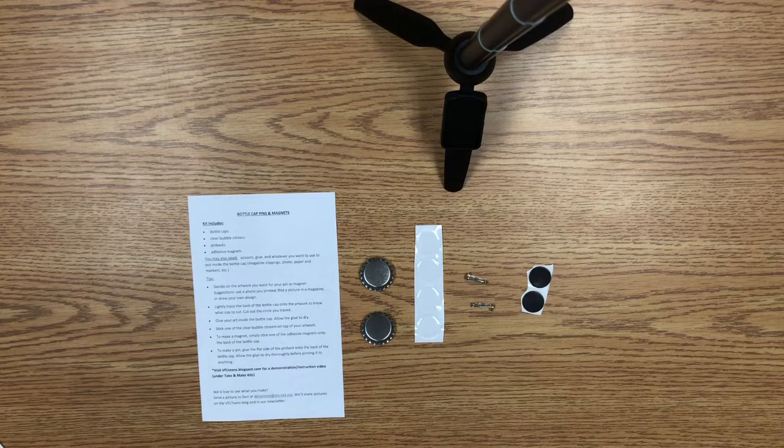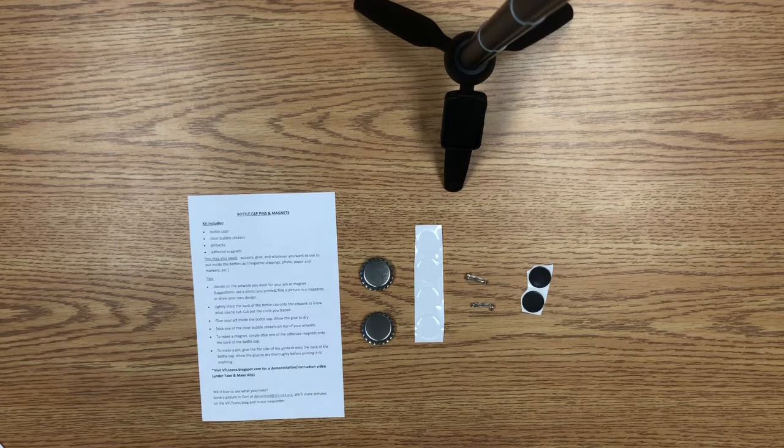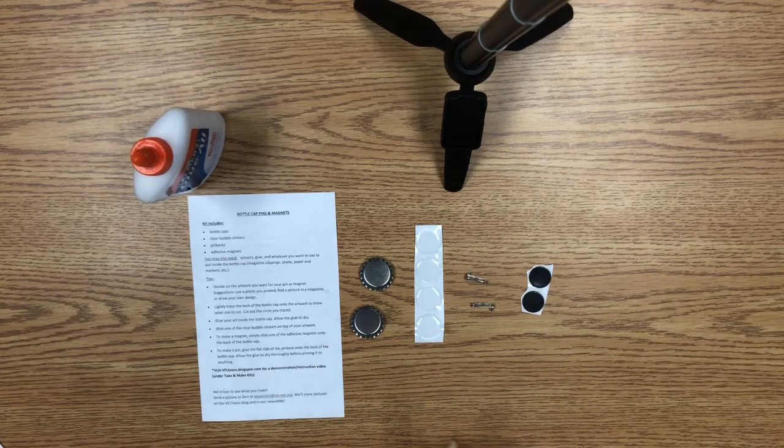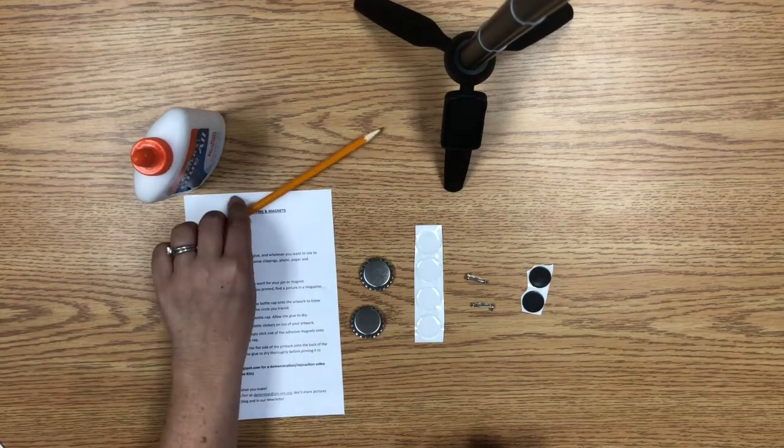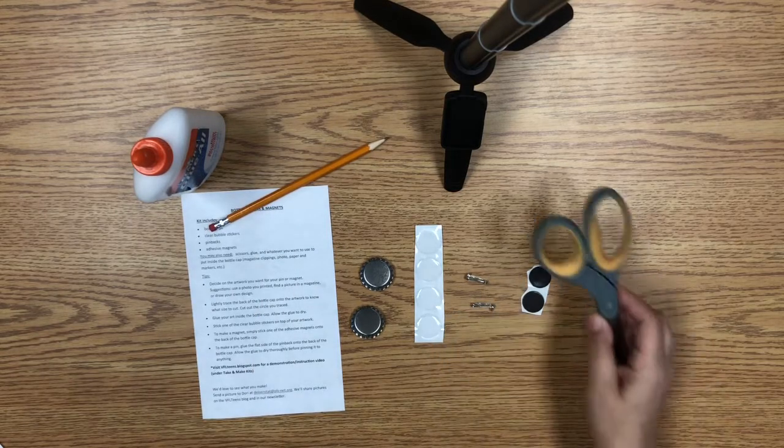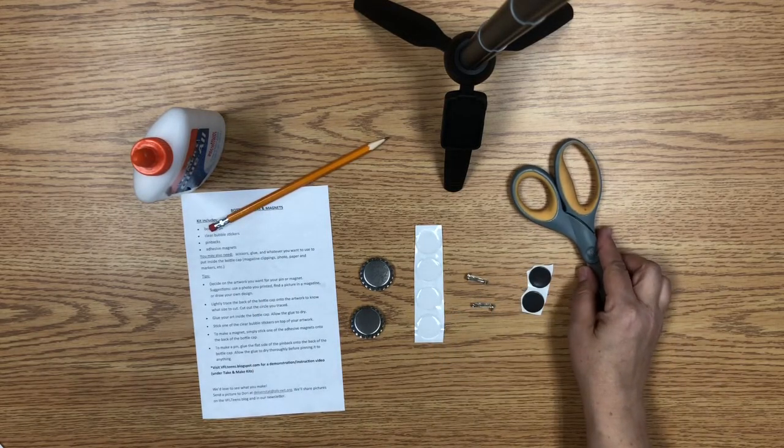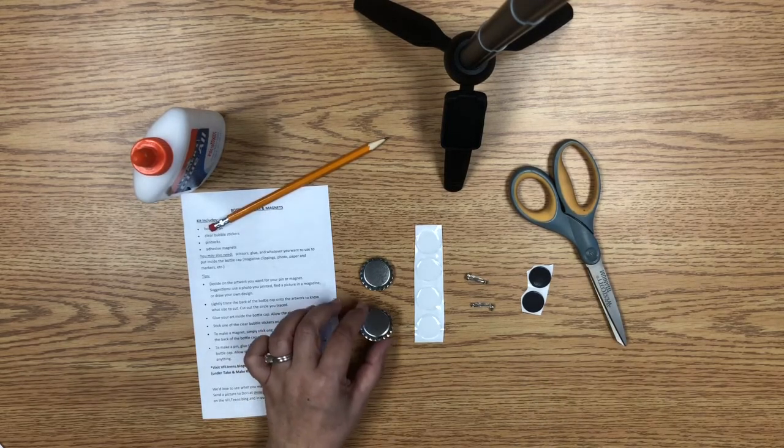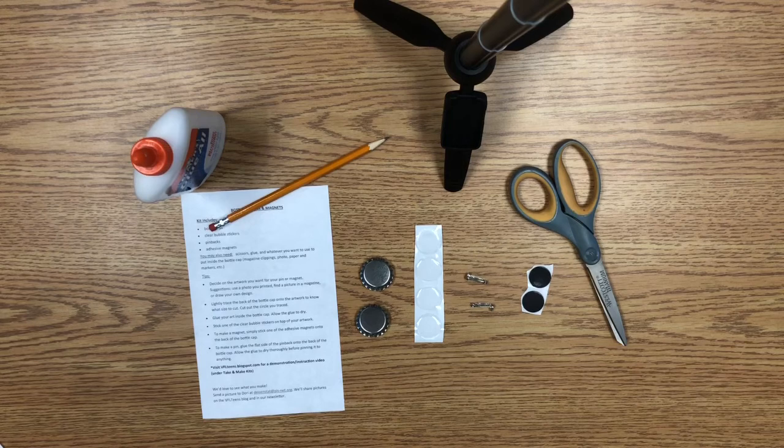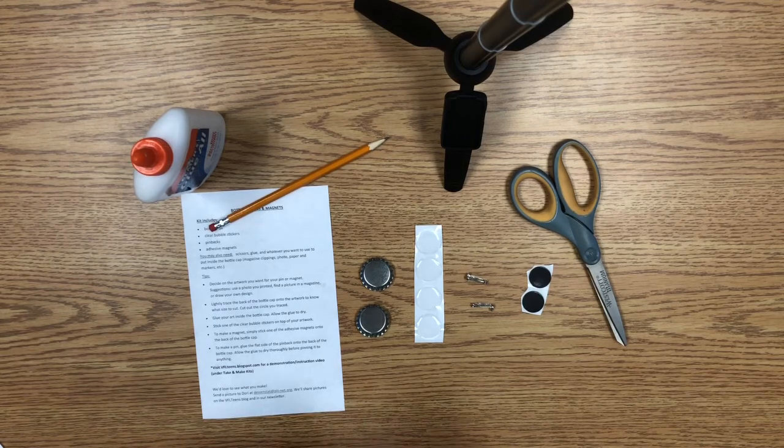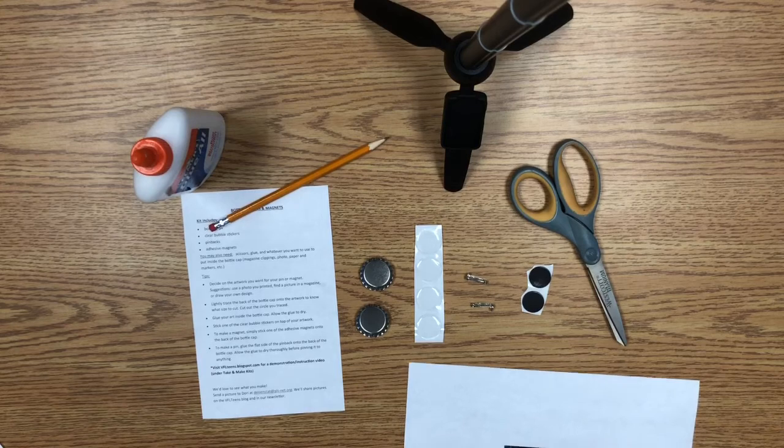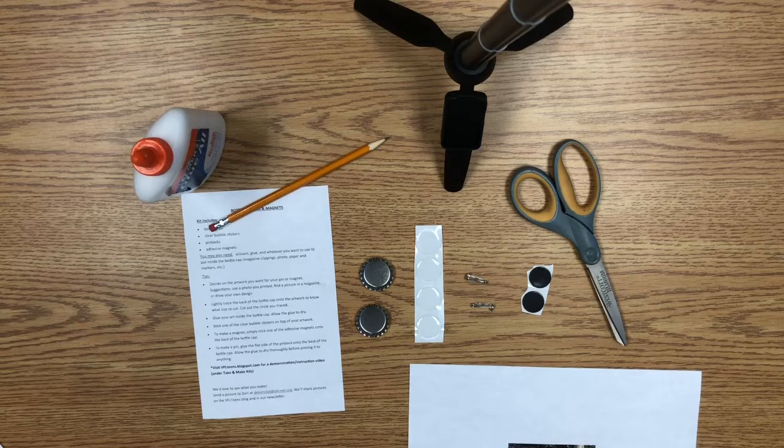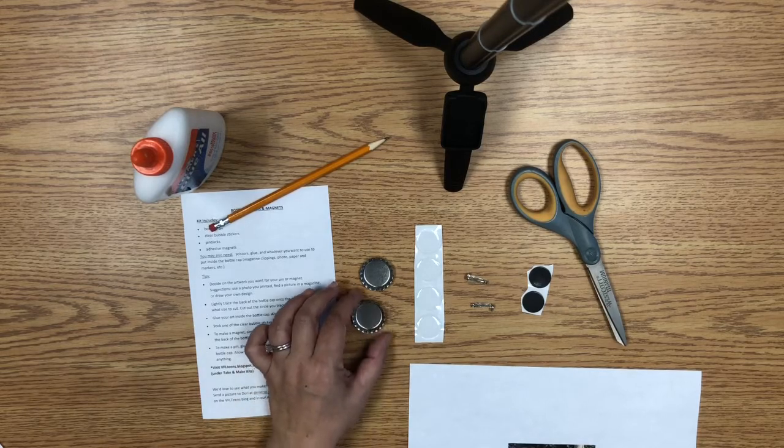Some things you might also need are some glue. A pencil will be helpful for tracing your design. Scissors you'll need to cut out your design to fit in your bottle cap. And then depending on what you want to put in your bottle cap, you can draw your own design for that or you can print out a photo. You can cut out items from a magazine that you like. What you put inside your bottle cap is totally up to you.